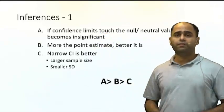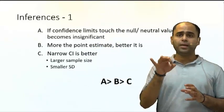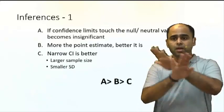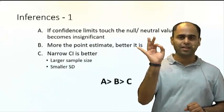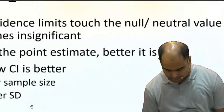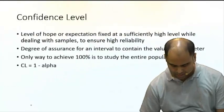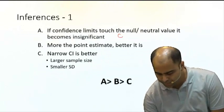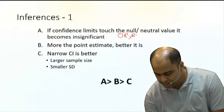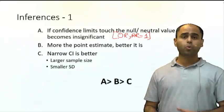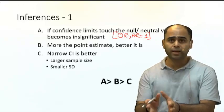What is the null value? When we talk about odds ratio and relative risk, if it equals 1, it means no association — that is the null value. So odds ratio and relative risk equal to 1 refers to the null value. Second, Rule B: the more the point estimate is away from the null value, the better.